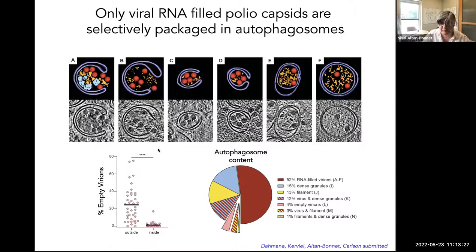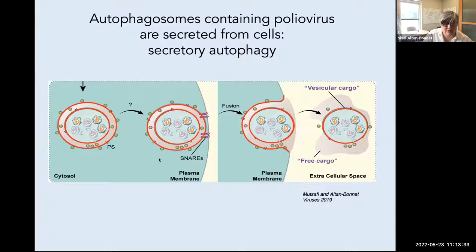Once these autophagosomes are formed with the infectious viral cargo in them, they transit to the plasma membrane. The outer membrane of the autophagosome fuses with the plasma membrane, and that's how you end up with the inner membrane vesicle released outside, which contains the poliovirus clusters.